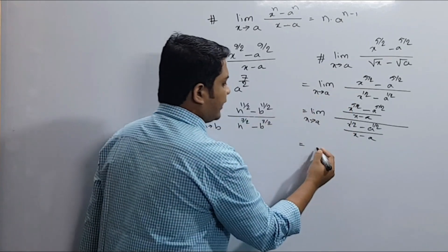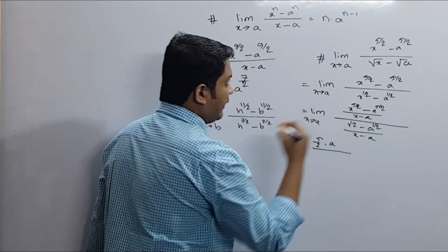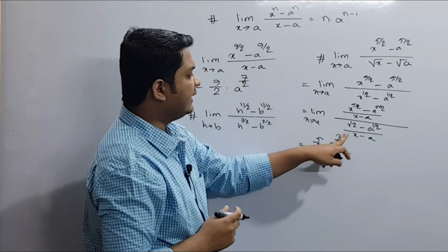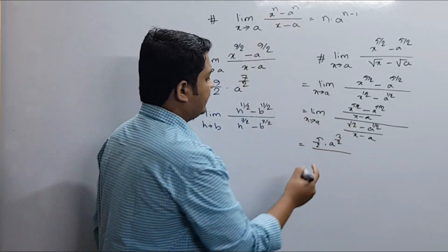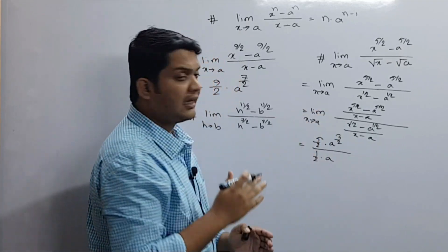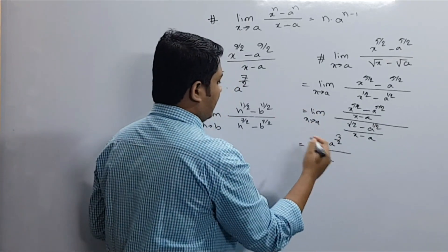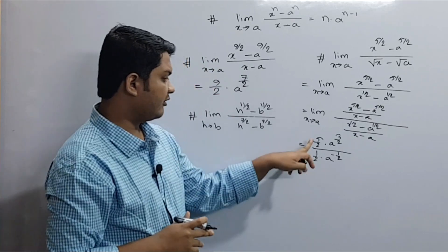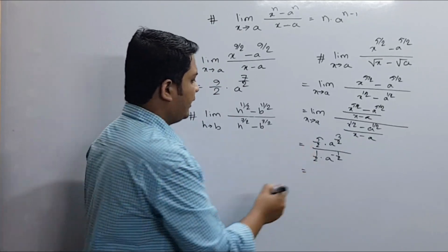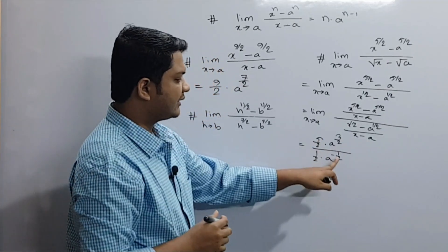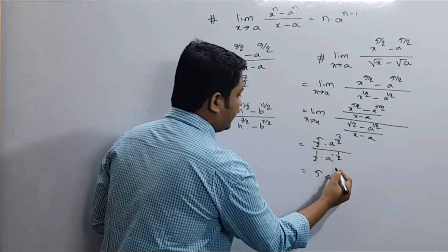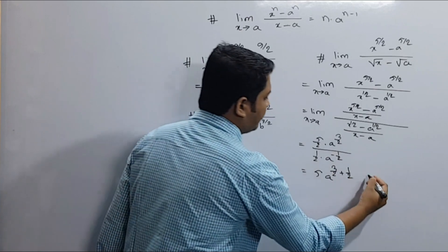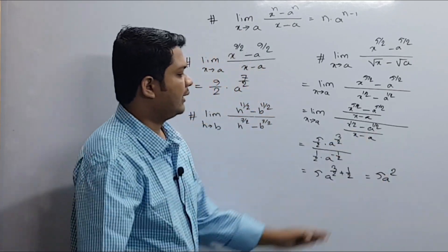5 by 2 into a to the power n minus 1; 5 by 2 minus 1 gives 3 by 2. And in another form, it is one half into a to the power half minus 1; half minus 1 is negative one half, then 3 by 2 minus 1 gives 1 by 2, and 3 by 2 plus 1 gives 4 by 2.